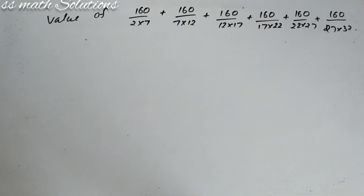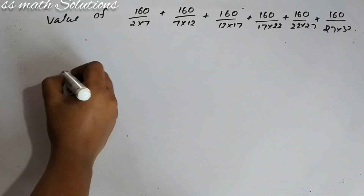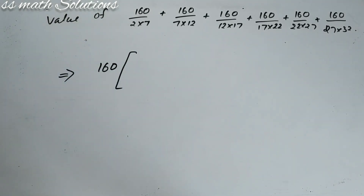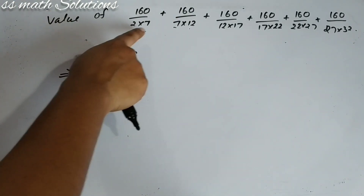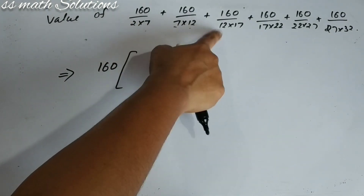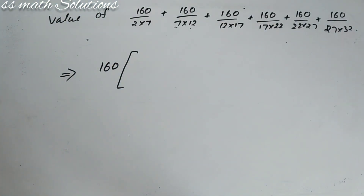Here is our next question: 160/(2×7) + 160/(7×12) + 160/(12×17) + 160/(22×27) + 160/(27×32). Everywhere 160 is common, so take 160 outside. The denominators follow a pattern A×B, B×C, C×D — repeating pairs with a common difference of 5: 7−2=5, 12−7=5, 17−12=5, 22−17=5. This pattern is required to apply the shortcut.